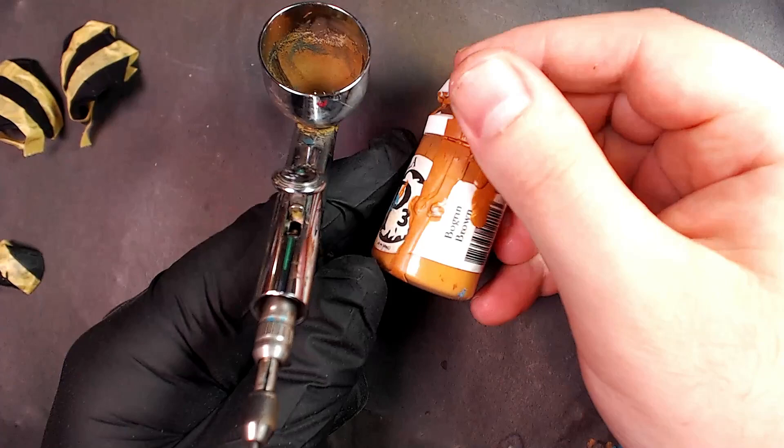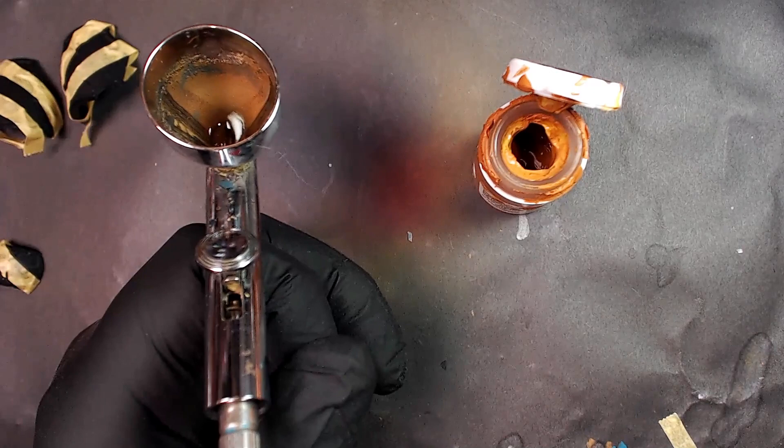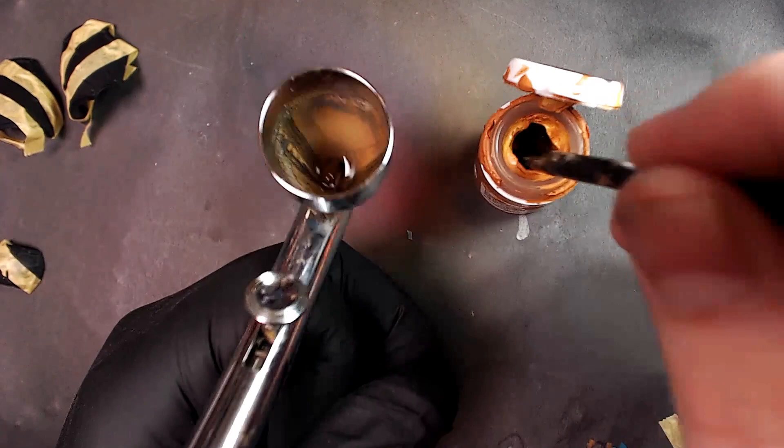Alright guys, we're gonna grab that airbrush. I'm gonna do this right now. A little flow improver. Now here's one of my favorite colors for beginning any yellow workup: Bulgrin Brown from the Cryx line. This is P3 formula. We'll grab a couple dollops of this paint, drop it in the airbrush.